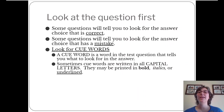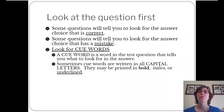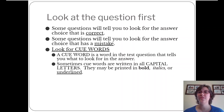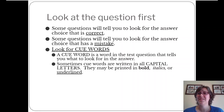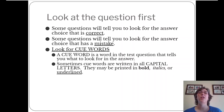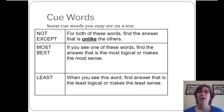Some questions will ask you to look for the right thing; others will ask you to look for the wrong thing. So look for cue words — words in the test question that tell you what kind of answer you're looking for. Typically they're distinguished in some way, especially on standardized tests, like being capitalized, bolded, or underlined. On the next slide, I've got a number of different cue words that can help you figure out what the question is asking.